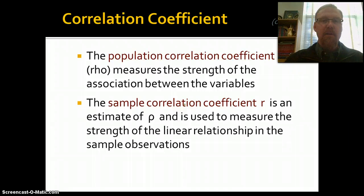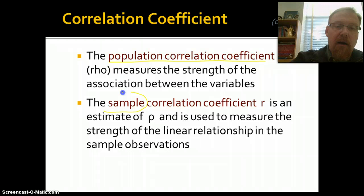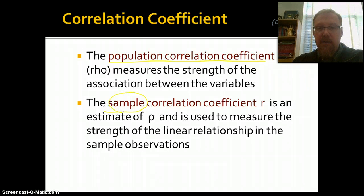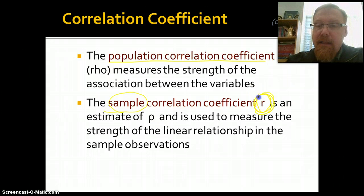Okay, so what is a correlation coefficient? Well, we can talk about the population and we can talk about the sample. We've done that before. We're often trying to get a statistic as a way to either describe or infer something about the sample. If we're looking at a population correlation coefficient, it's going to measure the strength of the association between those two variables. But what we are more often doing is getting the sample correlation coefficient, which is simply an estimate of rho, and is used to measure the strength of the linear relationship in the sample observations. And we often designate that as R.